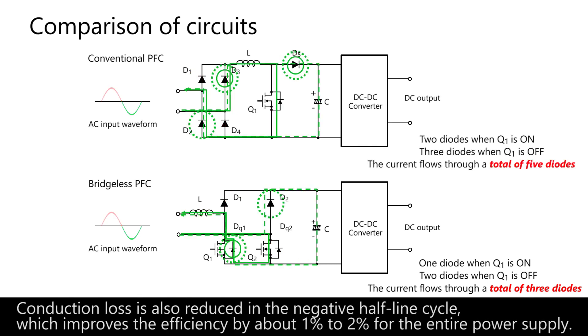Conduction loss is also reduced in the negative half-line cycle, which improves the efficiency by about 1% to 2% for the entire power supply.